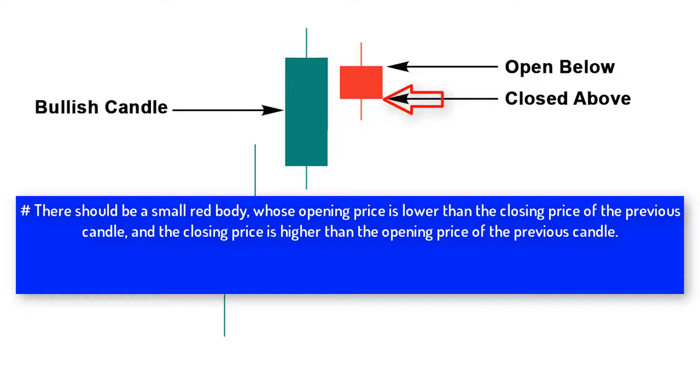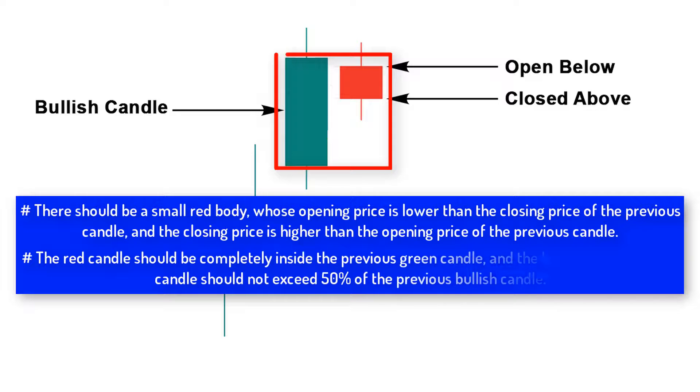Number two: The red candle should be completely inside the previous green candle, and the body of the small red candle should not exceed 50% of the previous bullish candle. These two points are very important to determine the 100% perfect bearish harami candlestick pattern.